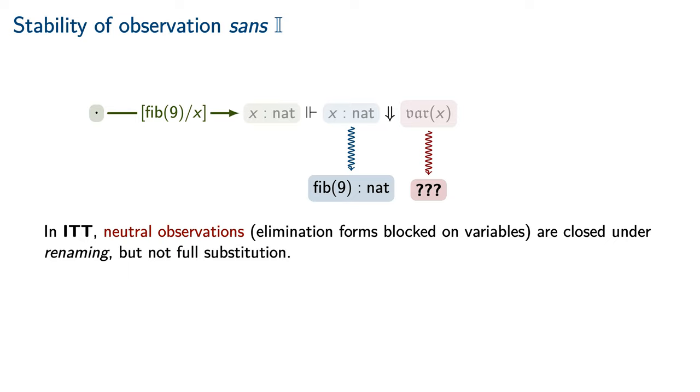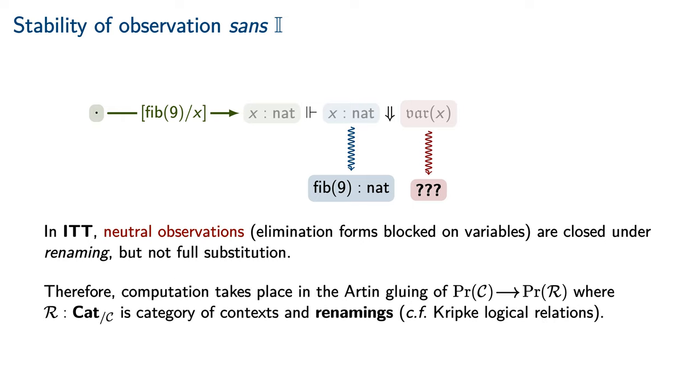This is a special case of the fact that in intentional type theory, neutral observations, which are basically elimination forms that are blocked on variables, are closed under renaming but not full substitution.